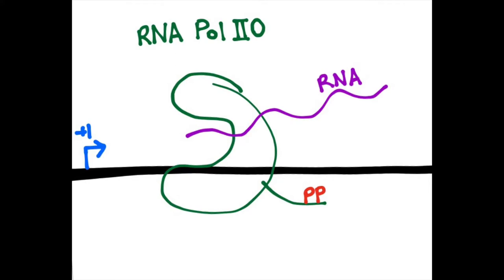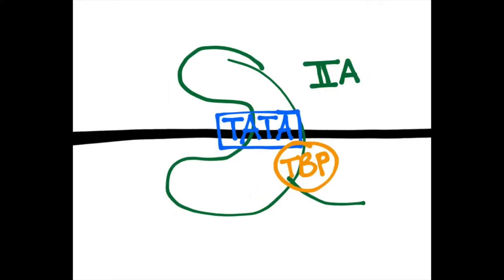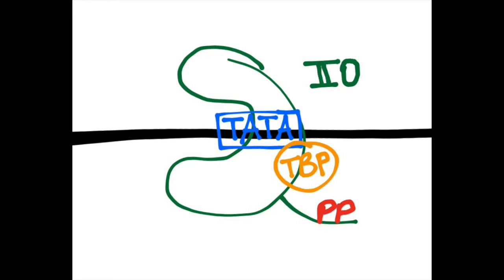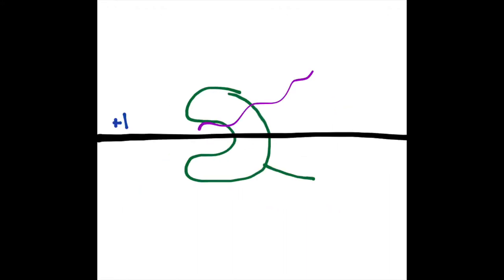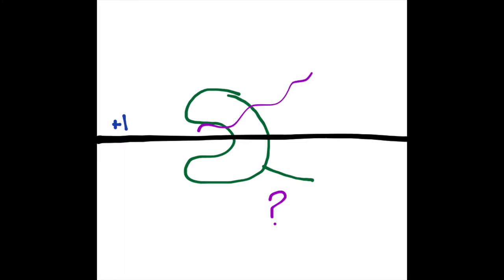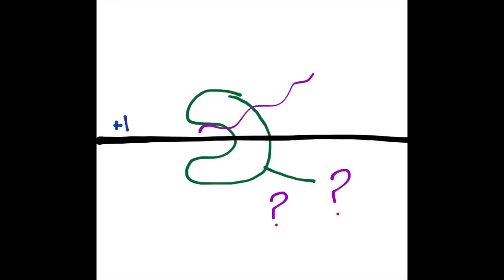This idea is confirmed by the knowledge that the unphosphorylated RPB1 CTD region of IIa binds much tighter to TATA-binding protein (TBP) than the phosphorylated RPB1 CTD region of IIo. Phosphorylating the RPB1 CTD region weakens the connection between RNA polymerase II and TBP, allowing transcription elongation to occur. There are some exceptions, however, since sometimes transcription can occur in vitro without phosphorylation of the CTD.